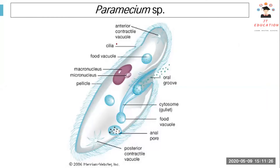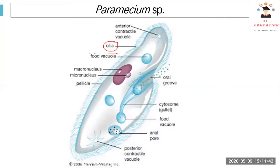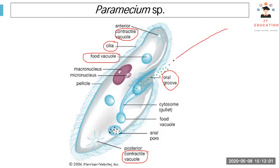Now we are looking at the Paramecium species. Key structures to know are: cilia, food vacuole, contractile vacuole (which has a star shape), and the oral groove. Paramecium actually has a mouth because it has an oral groove — nutrients go straight into the oral groove and form a food vacuole. Unlike amoeba, which extends pseudopodia to engulf food, paramecium swims towards the nutrients. The contractile vacuole has the same function as in amoeba, and cilia help with movement.